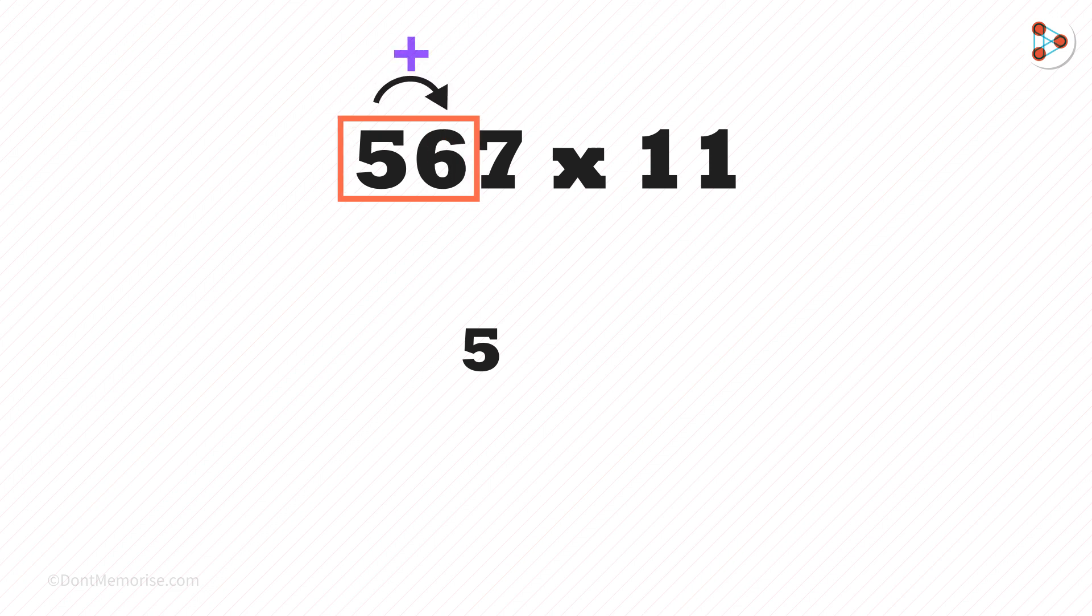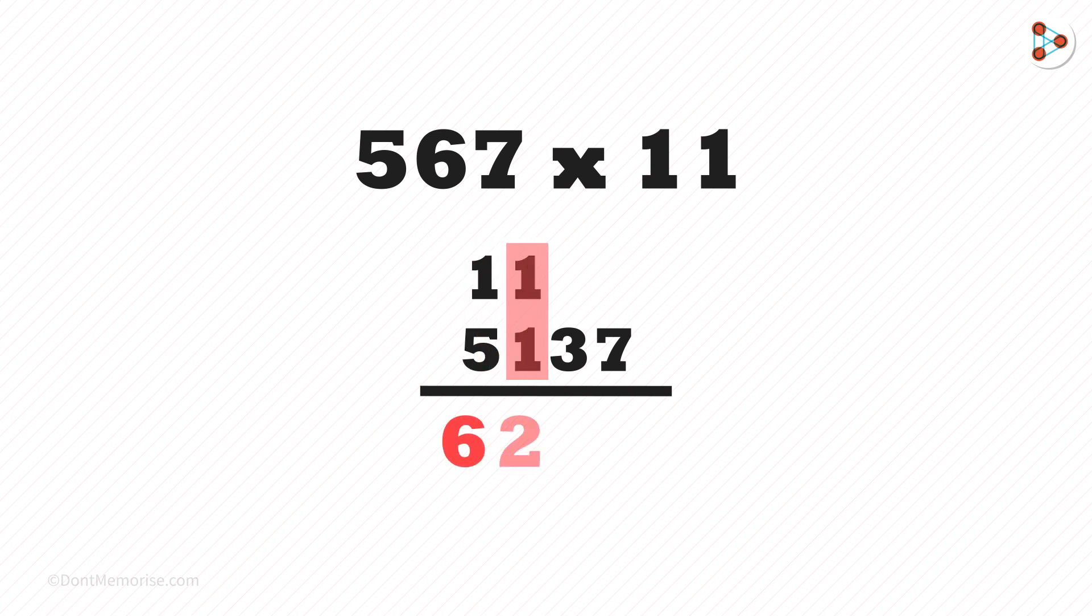5 plus 6 is 11. We shall write 11 like this. 1 here and 1 over 5 like this. 6 plus 7 is 13 and 7 is written as it is. 5 plus 1 is 6. 1 plus 1 is 2. And 3 and 7 are written as it is. 6, 2, 3, 7. This is our answer.